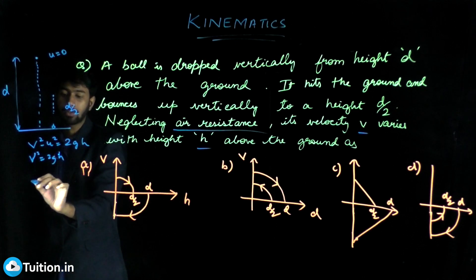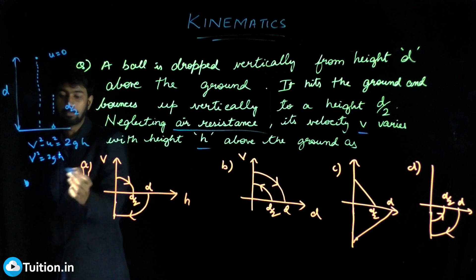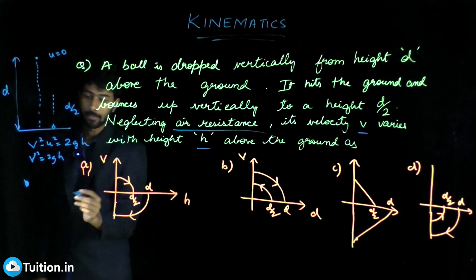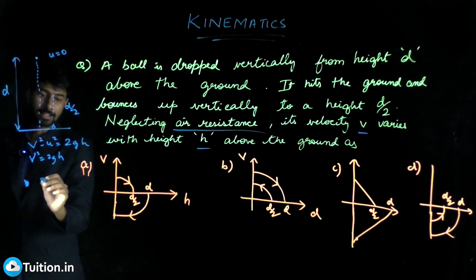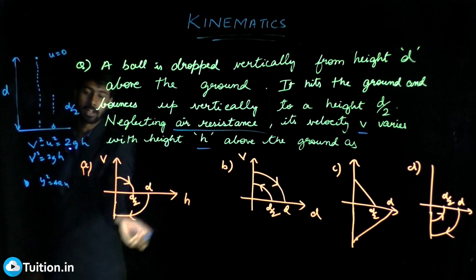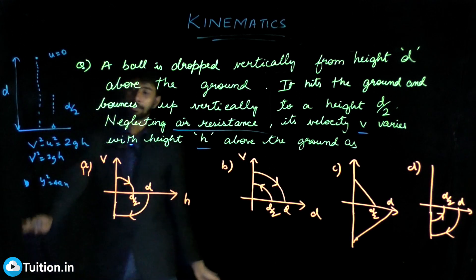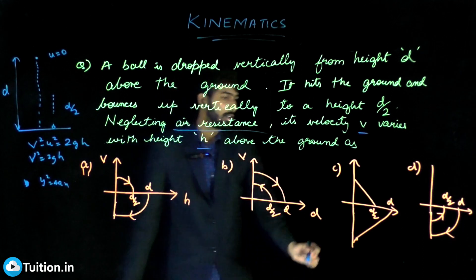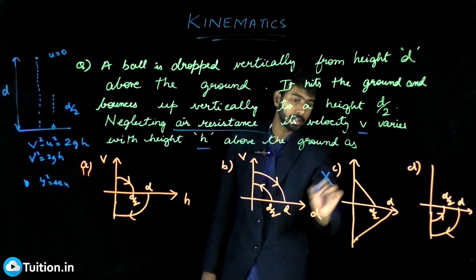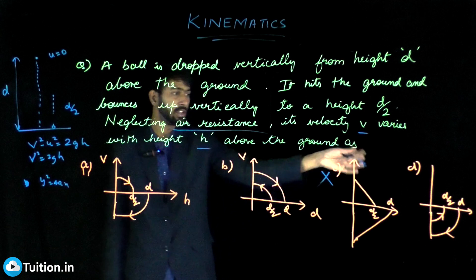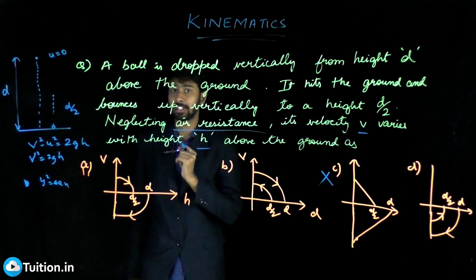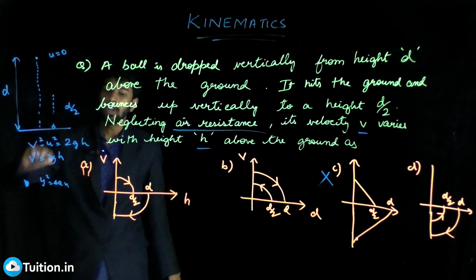It's of the form y² = 4ax — a parabola. So it can't be a straight line; that option is out of the question. It can't be option C. It can be any of the remaining options, but now we need to examine the direction of velocity.